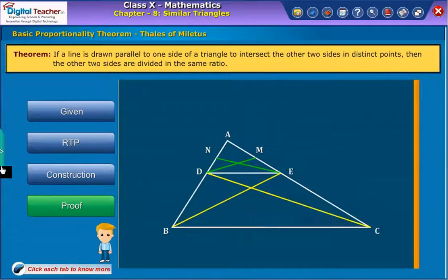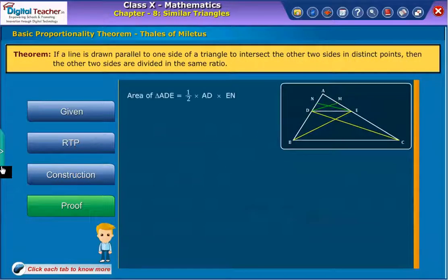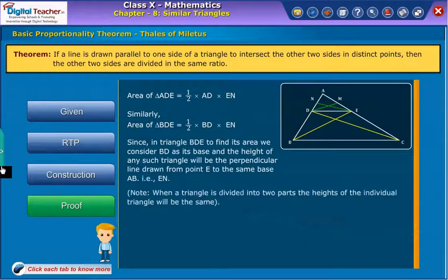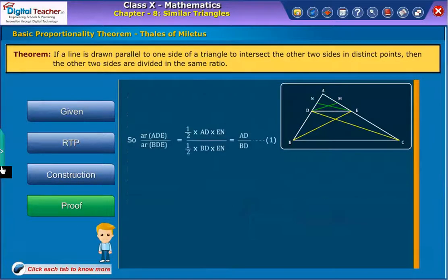Proof: Area of triangle ADE is equal to 1/2 × AD × EN. Area of triangle BDE is equal to 1/2 × BD × EN. So, by dividing area of triangle ADE with area of triangle BDE, we get equation 1.